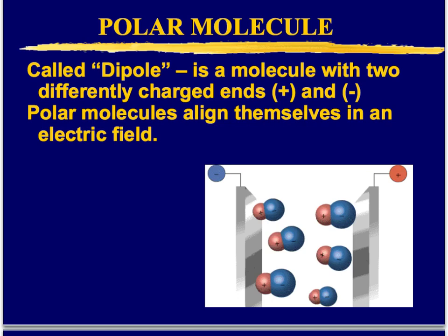A polar molecule has a dipole — a molecule with two differently charged ends, one positive and one negative. Polar molecules align themselves in an electric field. With a negative plate on one side and a positive plate on the other, the positive side of the molecule is attracted to the negative plate, and the negative end of the molecule is attracted to the positive plate. You can see how the molecules orient themselves in this very specific way. We would call this a dipole.